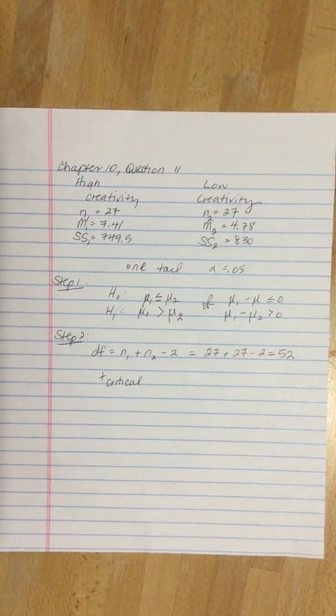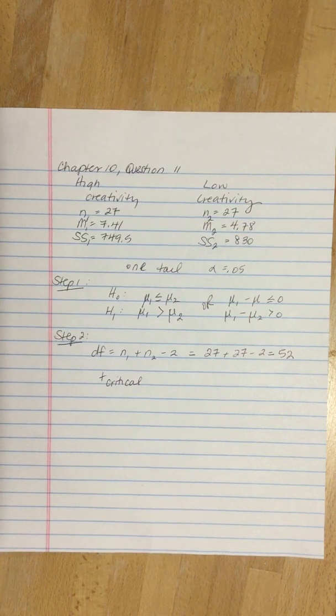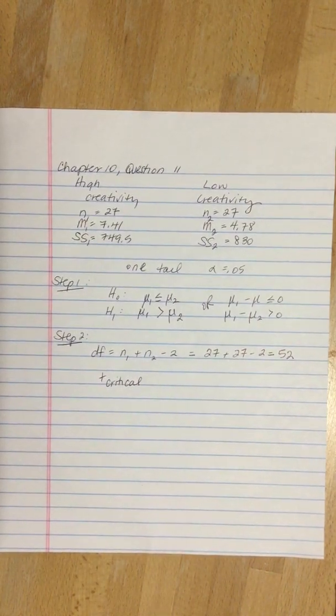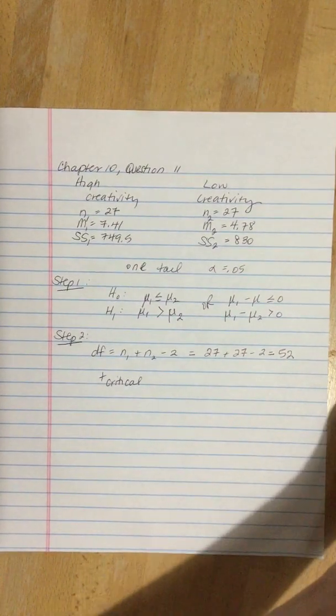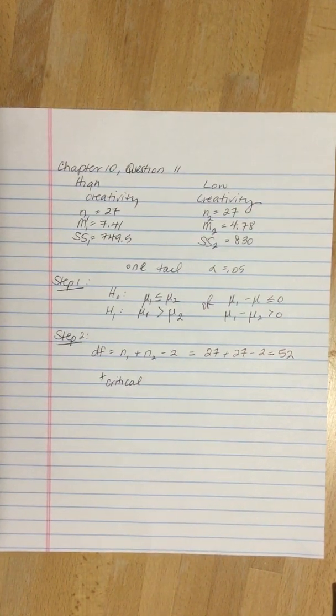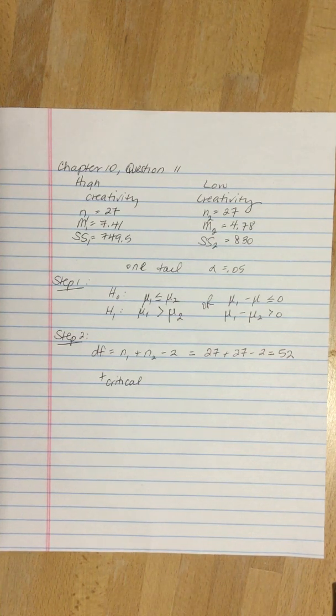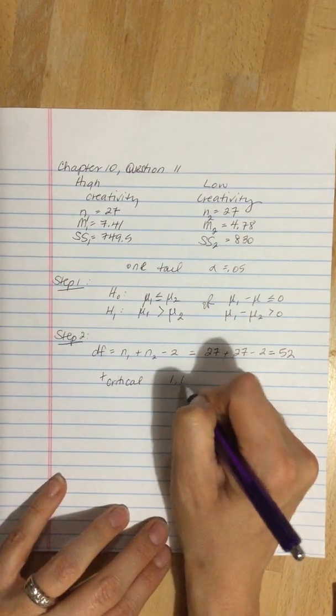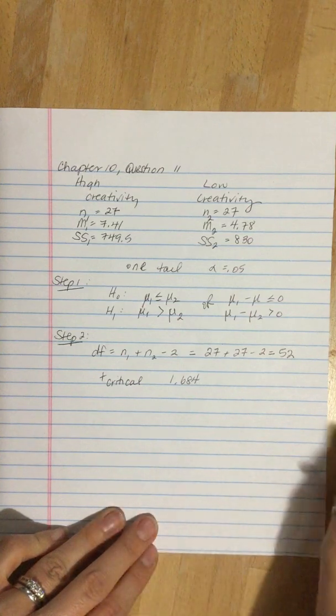With that we can go to the back of the book, we can find our t critical. The closest value, we go to our statistical table b2 in our textbook. The degrees of freedom we either have 40 or we have 60, and we're always going to go with the lower degrees of freedom. So if we go across at 40 and we read across with a one tail 0.05, our t critical is 1.684, and it's only positive. It's not positive and negative because it's a one tail.